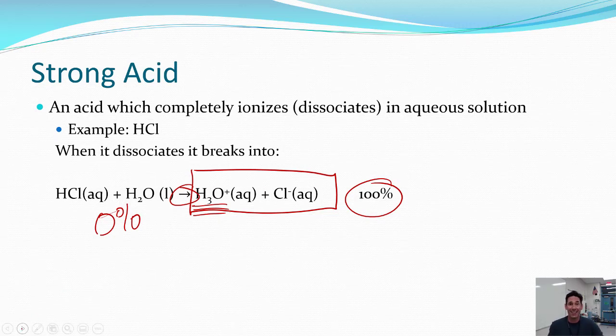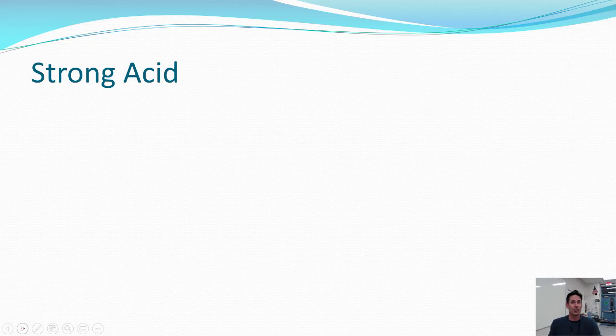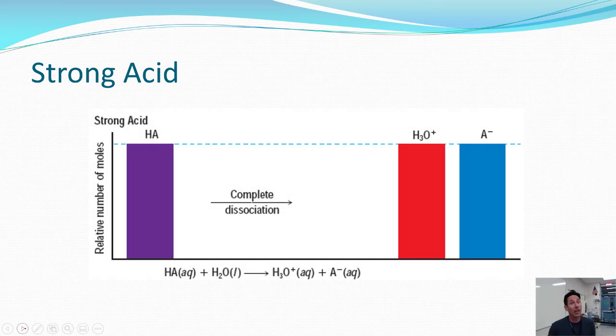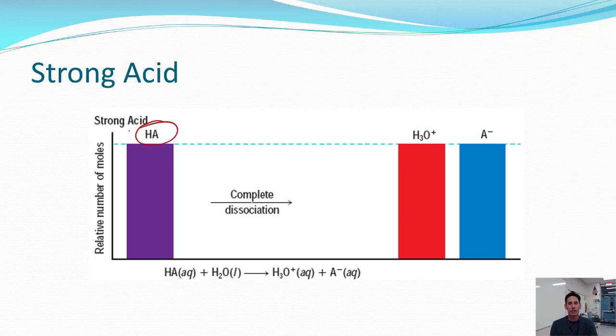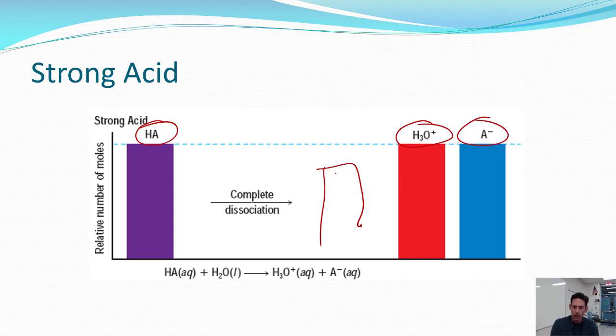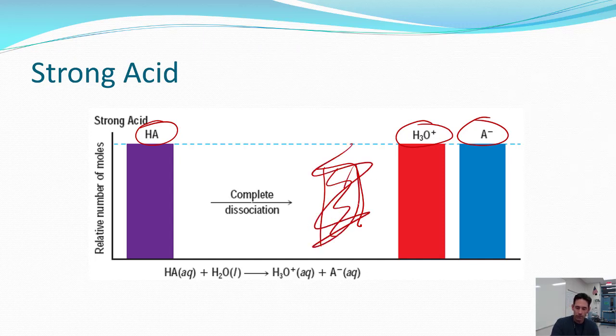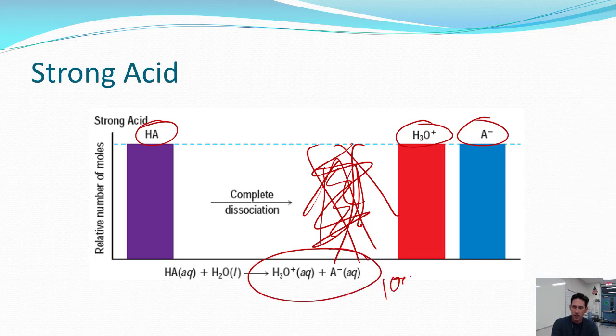On the other hand, a weak acid. We have pictures to describe this. So, if this is the acid that we were starting with, we would end up with this as our products here. Notice, there is no column that is purple. There's nothing. Zero. It is 100% of the product.